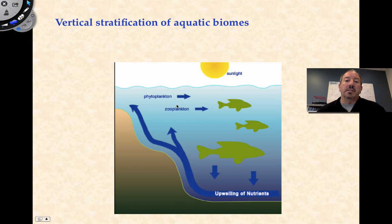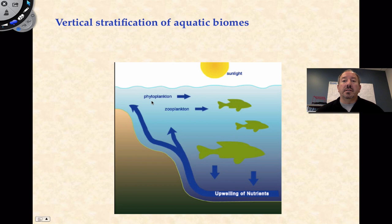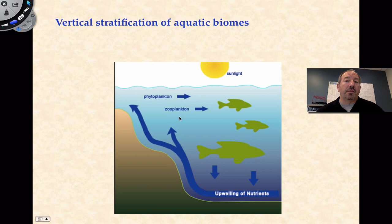The zooplankton follows the phytoplankton — zooplankton eats phytoplankton, then bigger fish, then the next fish. So you have the food chain going on in the water. When things die, they settle to the bottom. What's fascinating is the nutrients that fall to the bottom — it'd be great if there were nutrients up at the top, because phytoplankton need nitrogen and phosphorus. To generate a lot of phytoplankton, you need nutrients, so if it was all falling down, that wouldn't be good.